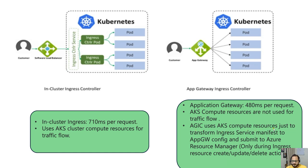AGIC uses AKS compute resources only to transform ingress service manifests into App Gateway configuration. It only sends traffic through Azure Resource Manager during resource create, update, or delete operations. If you are not making any changes to your application, traffic goes directly from App Gateway to the pod.